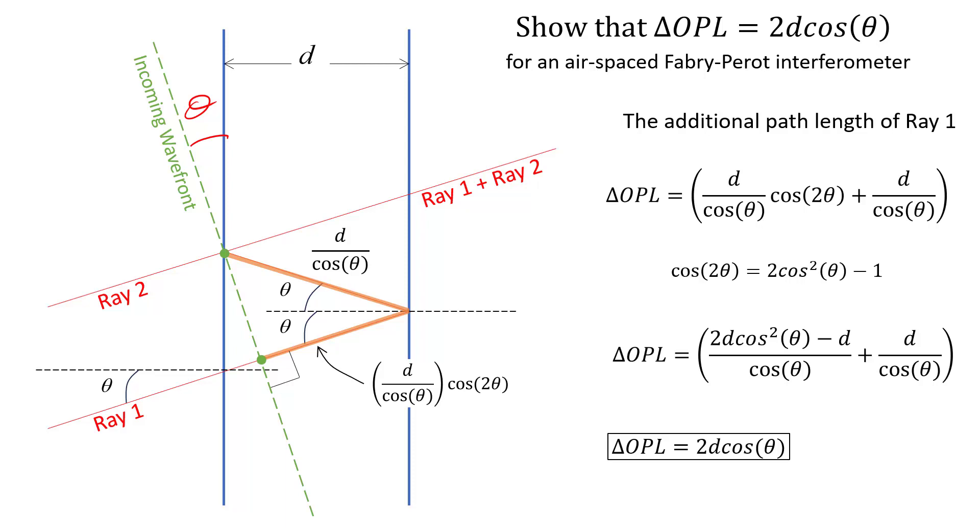Now you might say it still doesn't make intuitive sense. Because as the angle of incidence becomes larger, it just doesn't add up, in my head anyway, that the optical path length would get smaller. But it actually does, because this segment is getting smaller as the angle gets larger.